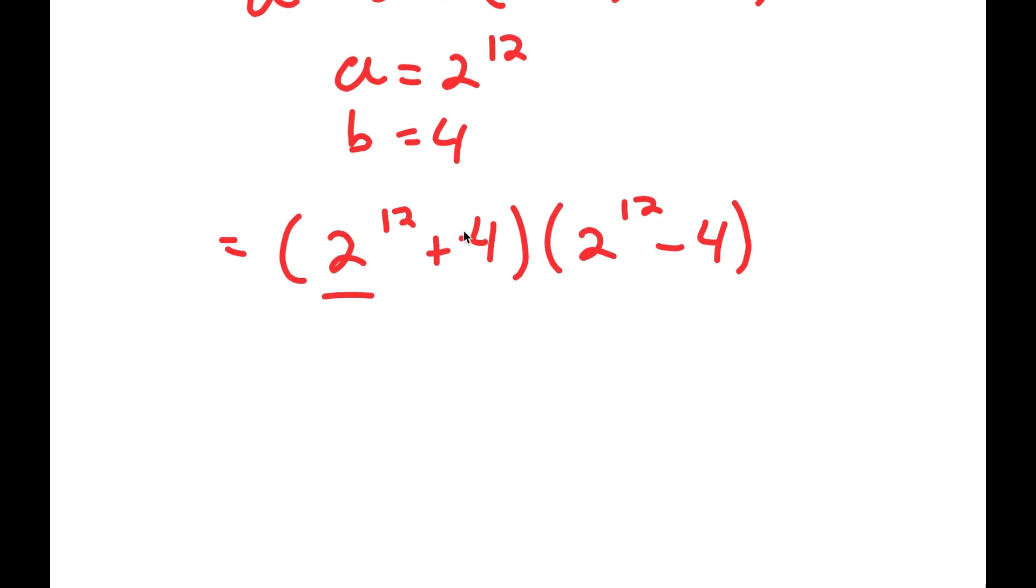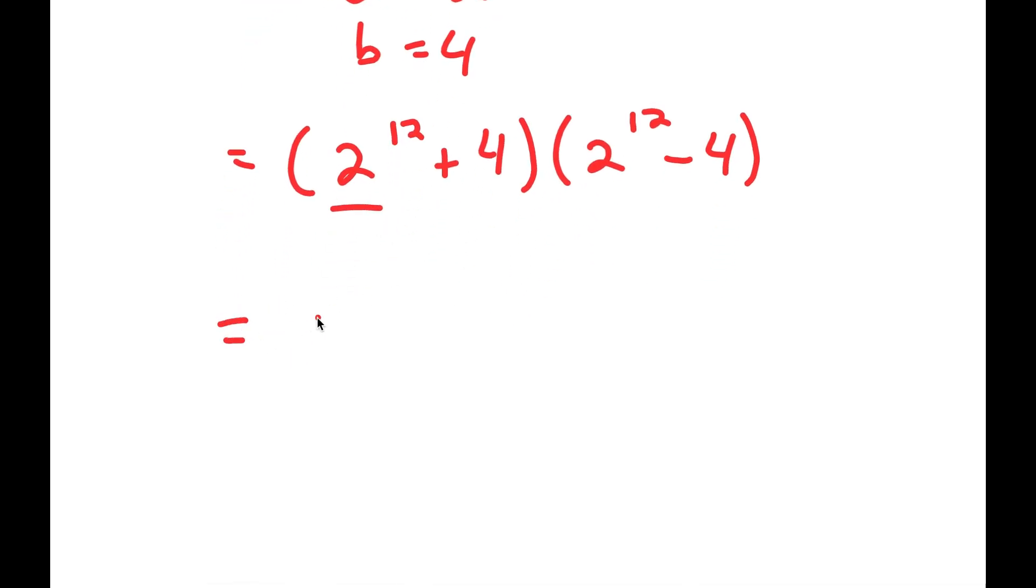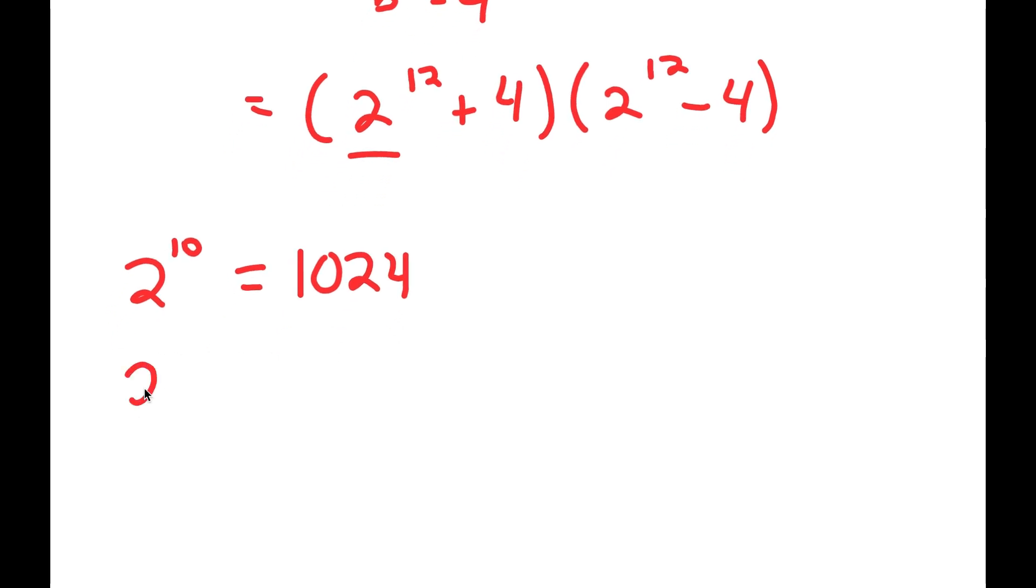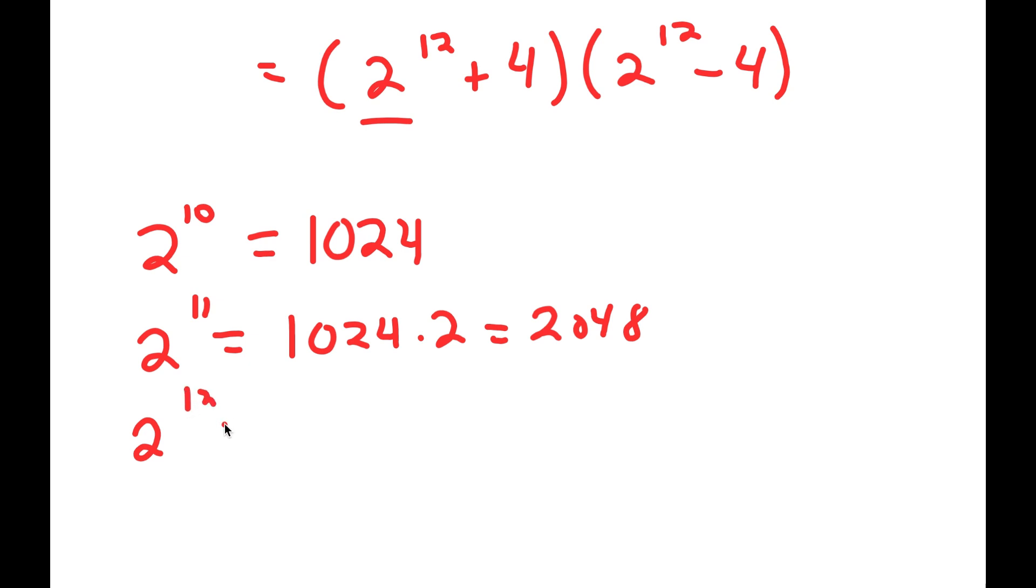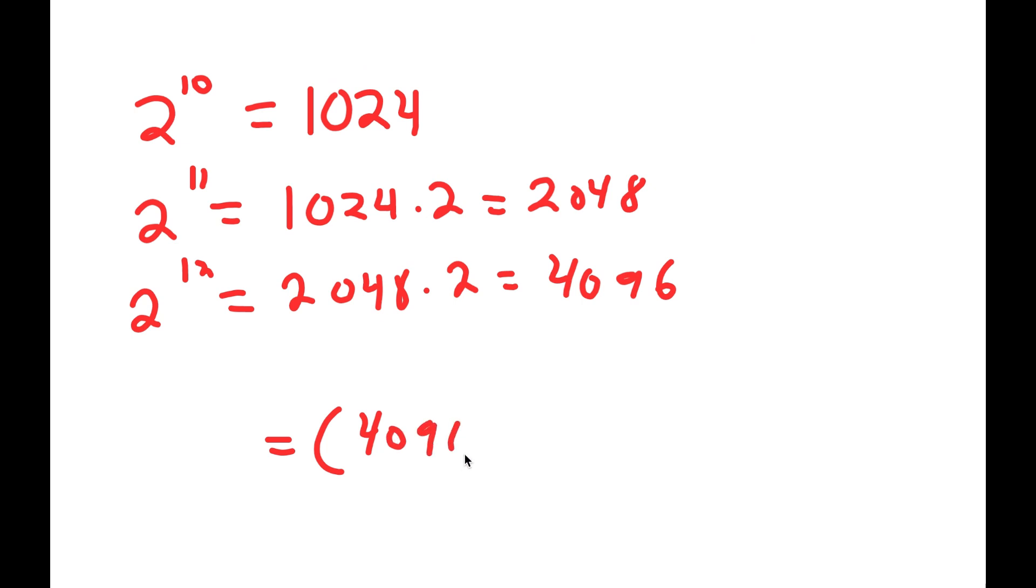Now, 2 to the power of 12, what is this equal to? Well, we know that 2 to the power of 10 is equal to 1024. Meaning 2 to the power of 11 is the same thing as 1024 times 2, which is 2048. And 2 to the power of 12 is equal to 2048 times 2, which is 4096.